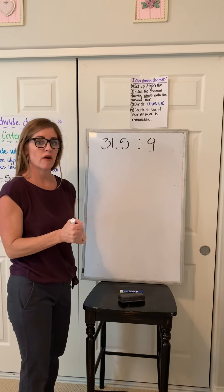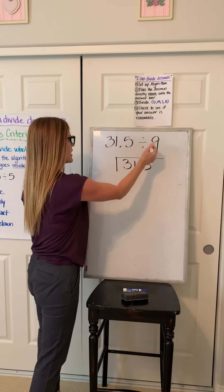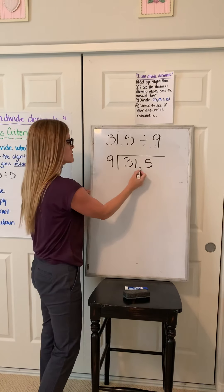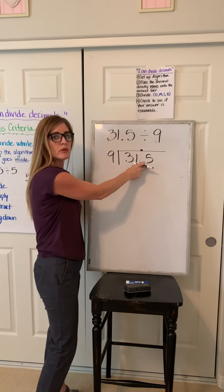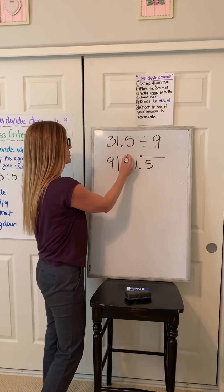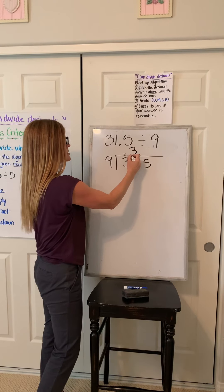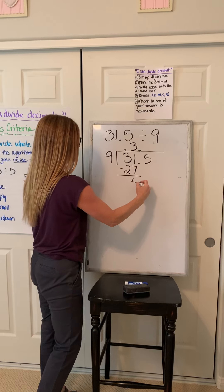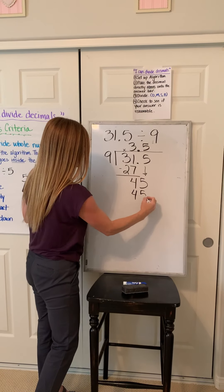Let's give this problem a try: 31.5 divided by 9. First, set up the algorithm correctly — create the division bar, first number goes inside. Second step: place the decimal directly above where it is, not in the back, not up here — directly above so it's in the same place value. Now we're ready for the division steps. 9 into 3 won't work. 9 into 31: I can make 3 groups. 3 times 9 is 27. Subtract — I end up with 4 left over. I have a 5 that's still waiting for a turn, so bring down that 5. 9 dividing into 45 goes 5 times. Notice I place my answer above the number whose turn it is. 5 times 9 is 45. Subtract — and I have no remainder.